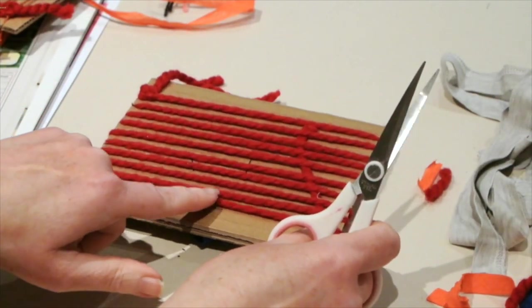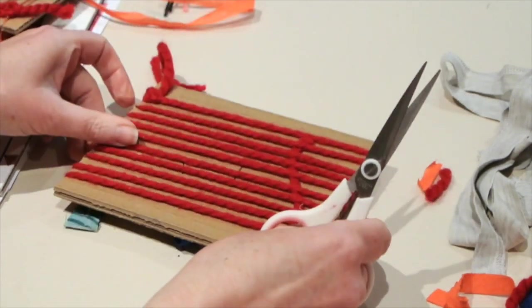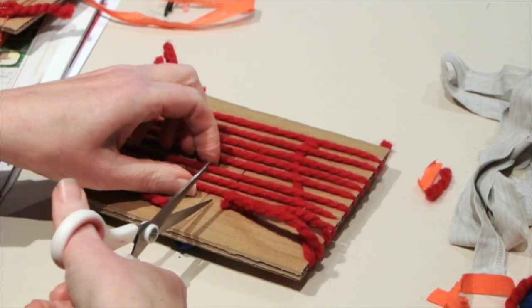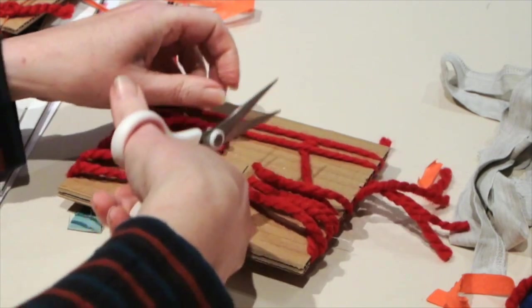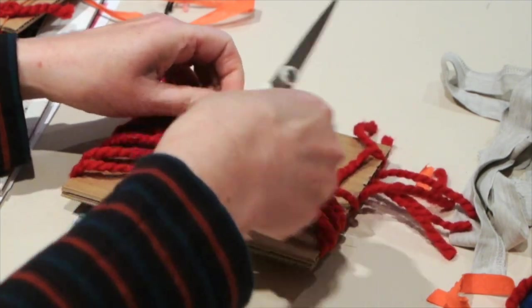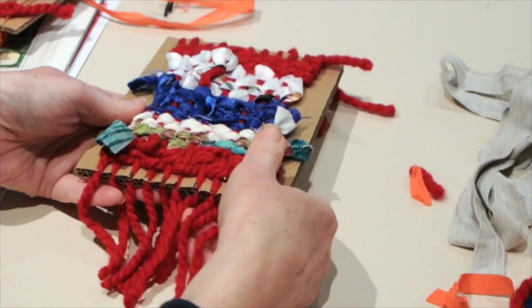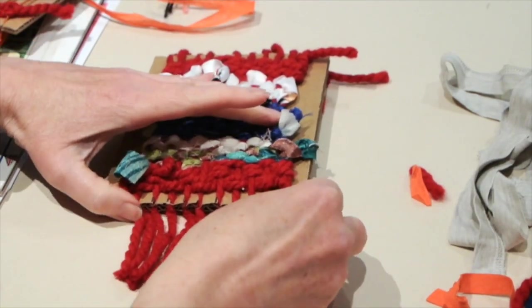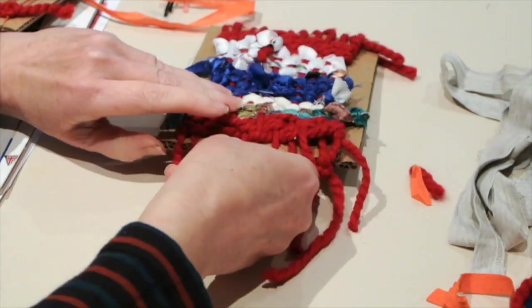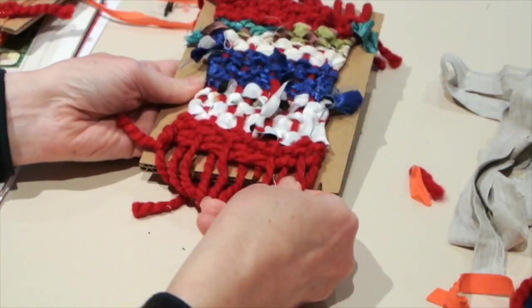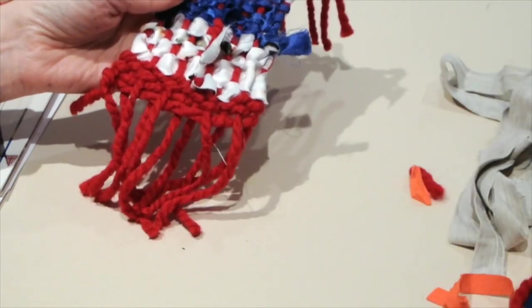I need to cut through the back of my loom. I'm just going to cut through the strings on the back. Then I turn my board back over and very gently remove these strings off of my loom. Now I can remove my cardboard loom to use again later.